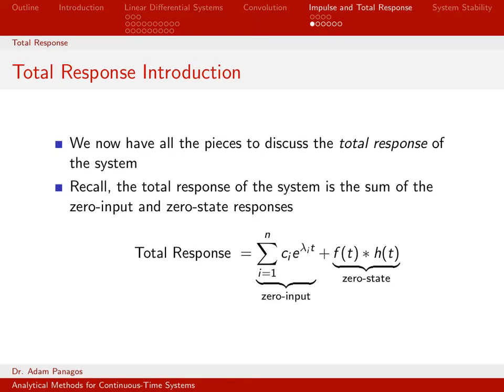Given a system with some initial conditions and an arbitrary input, we would like to be able to compute the output for that system. Our strategy has been to break it down into two pieces. We've said that for linear systems, the total response of a system can always be broken down into the zero input component plus the zero state component.